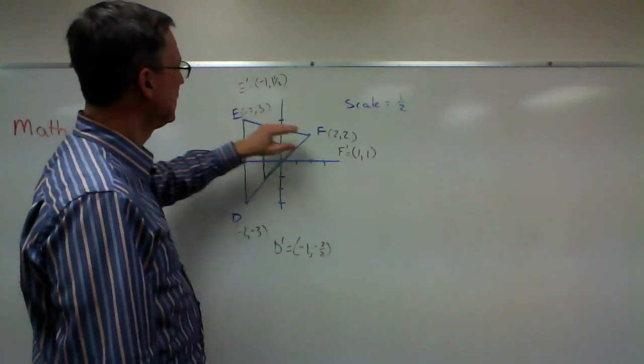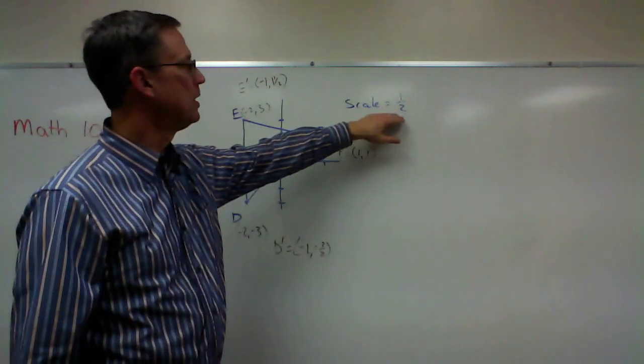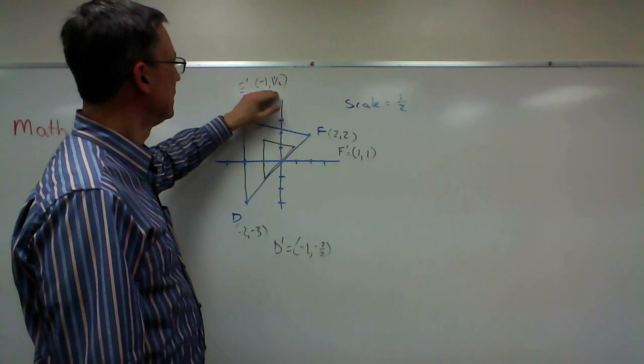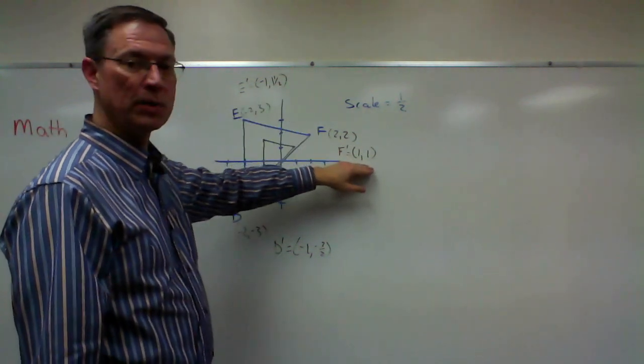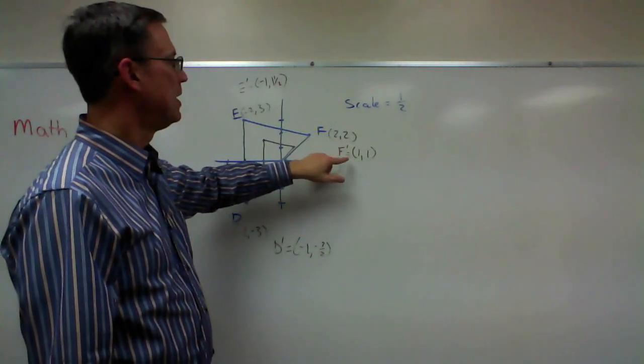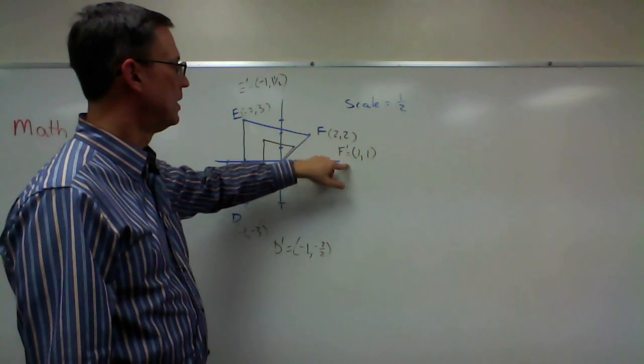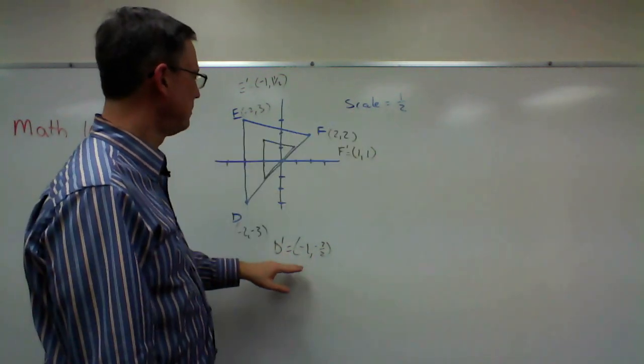But that's what we're doing is we're taking each of these points, multiplying them by the scale factor to get the new value. We call that the prime or the image of that point after that scale factor has been applied.